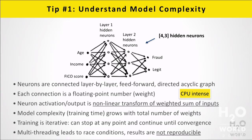Let's start with tip number one: understand the model complexity. What is a deep learning model? It's an artificial neural net — that's what it is for us at H2O. You don't have complicated recurrent or recursive neural nets. This is just straight, old-school, fully connected, feed-forward neural nets, which means each layer of numbers feeds into the next. The leftmost side has features coming in, like age, income, and FICO score — all numeric features.